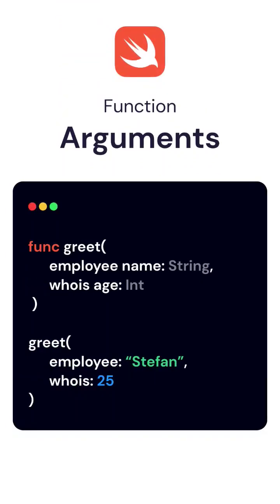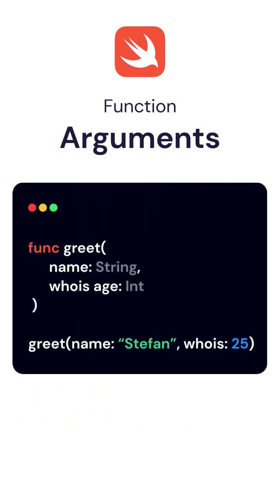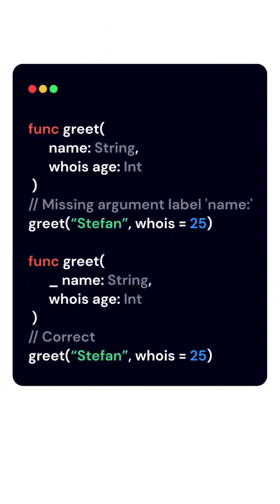In Swift, on the other hand, there are two concepts: argument label and parameter name. Argument labels are used in a call site and they allow a function to be called in an expressive manner while still providing a readable function body. Argument label is optional and, if not specified, a parameter name will be used instead. You are required to specify a parameter name when calling a function unless you add an underscore as an argument label.